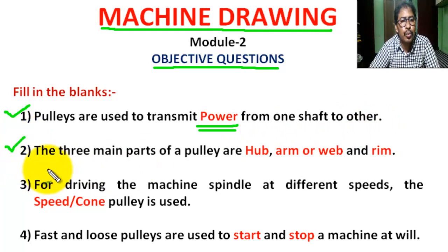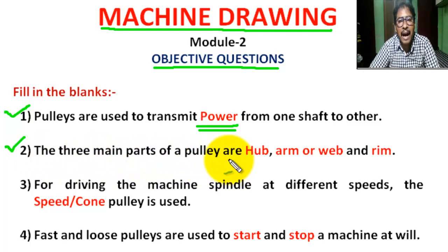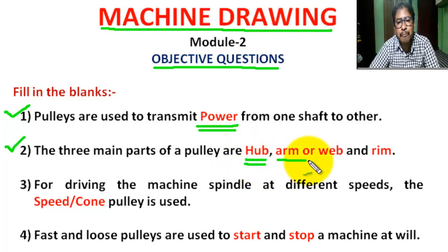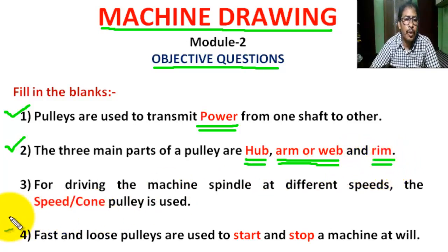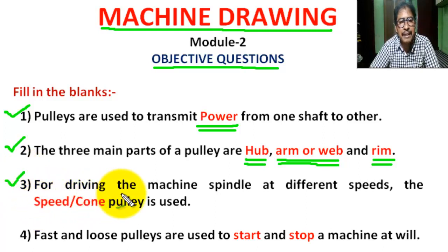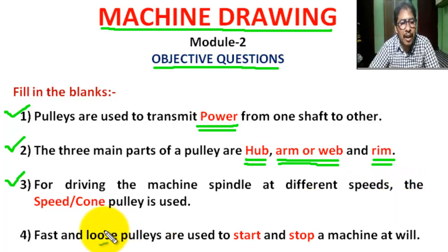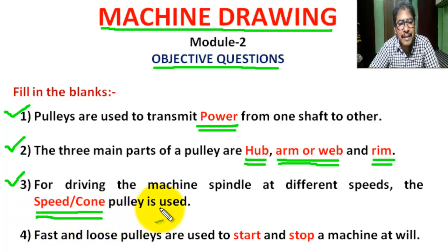Question 2: The three main parts of a pulley are: 1. Hub, 2. Arm or Spoke, 3. Rim. Question 3: For driving the machine spindle at different speeds, the cone pulley or speed pulley is used.